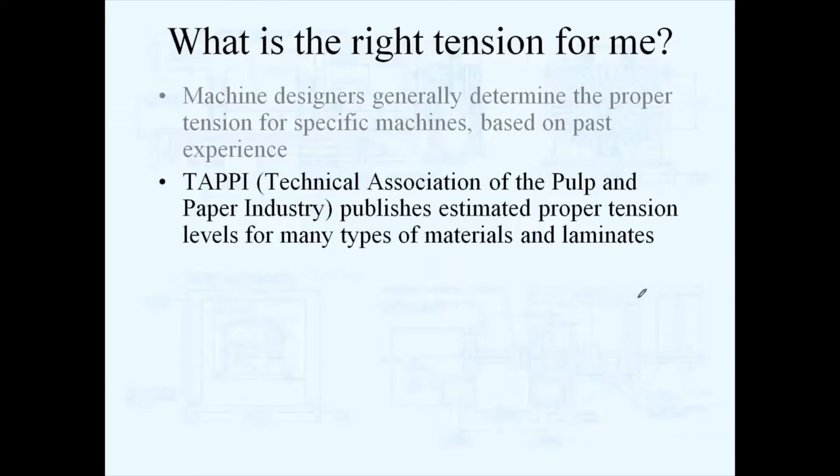TAPI publishes papers that have estimated tension levels for different materials and laminates. There are other industry resources. The internet has lots of places you can go to look at estimated tensions for certain types of materials.